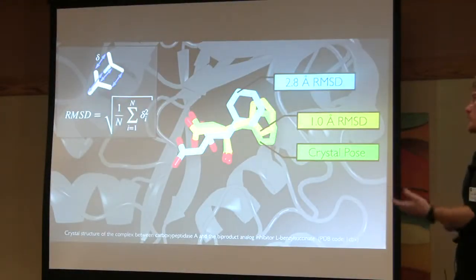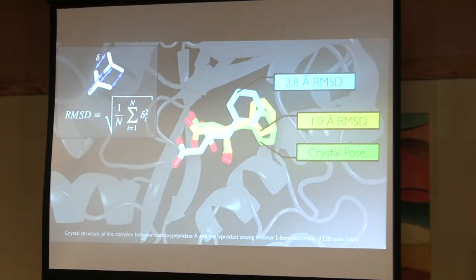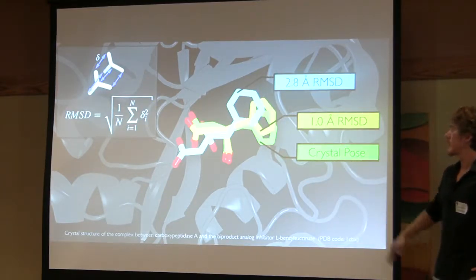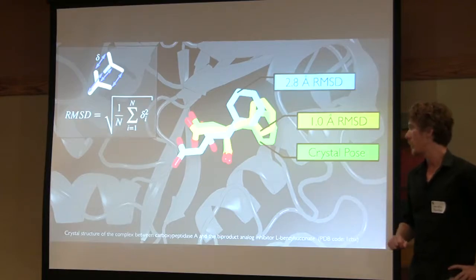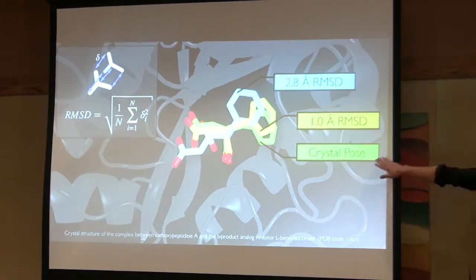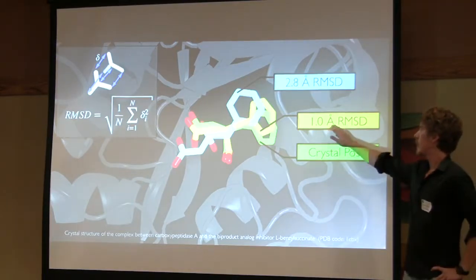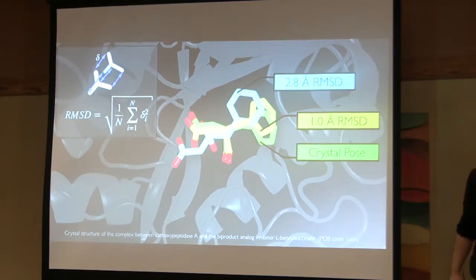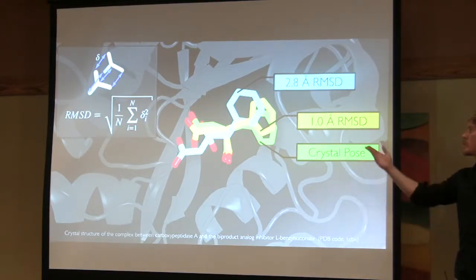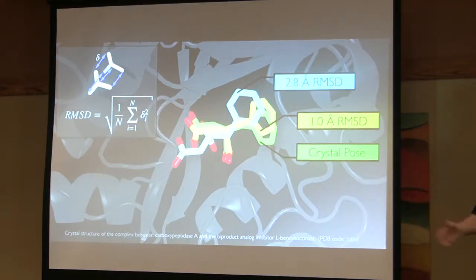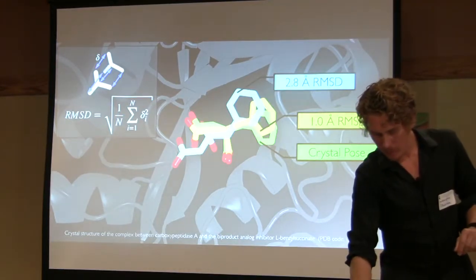Just to give you an idea for the numbers that we use to quantify what near-native means, we use the RMSD, the root mean square deviation, the distance between atoms. This is the protein binding cavity that I showed you in the beginning, from carboxypeptidase A. So again, in green, the crystal structure. And just to give you a feeling for the numbers, the yellow one would correspond to a 1.8 angstrom RMSD, almost near-native, almost the crystal pose. And the blue one would correspond to a docking pose that has a 2.8 angstrom RMSD. Usually in the field, 2 would be considered near-native, 2.5 is still passable. So 2.8 is not really near-native anymore. Just to give you a feel for our measurement of near-native, how we quantify this.